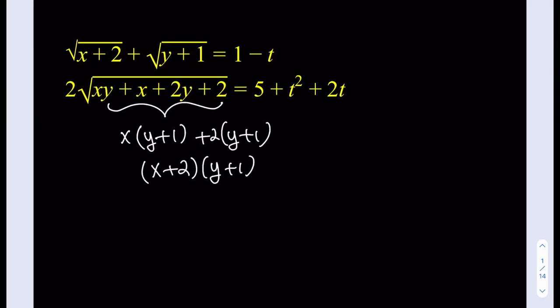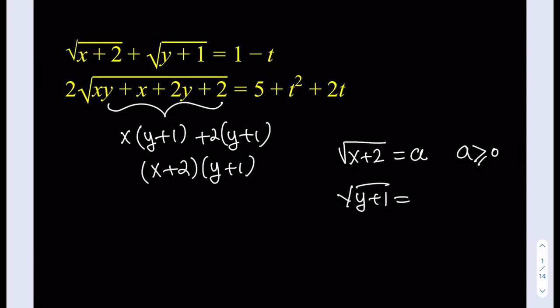We're going to use a very powerful method in math called substitution. Since the square root of x plus 2 and the square root of y plus 1 repeat, we can designate variables for them. Let the square root of x plus 2 equal a, where a is greater than or equal to 0. And let the square root of y plus 1 equal b, where b is also non-negative.